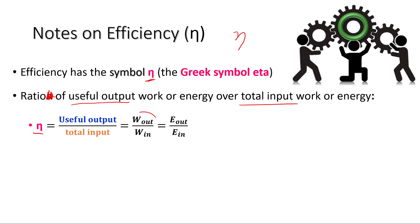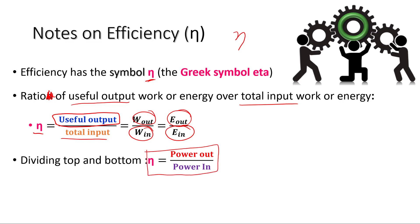So we can write efficiency as work out over work in, or energy out over energy in. But you've got to remember, it's just whatever our useful output is over our total input. We can also write efficiency in terms of power by dividing both the numerator and denominator by time. Work over time is power, or energy over time is power. So work out over work in just becomes power out over power in. And efficiency can also be written as power out over power in.